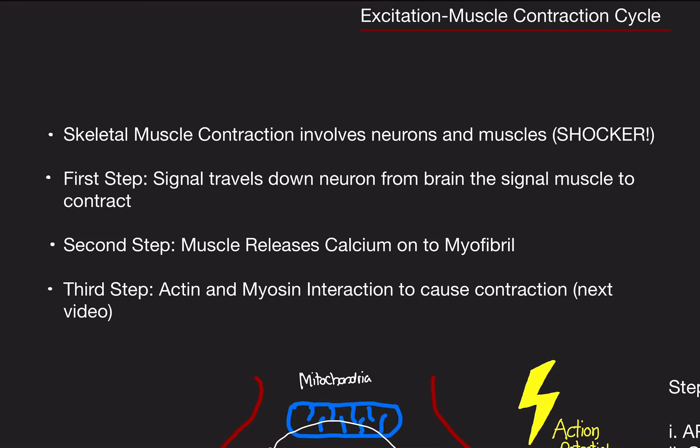Welcome back. Today we're going to be talking about the muscle contraction cycle. Your skeletal muscles have the ability to contract. There are two things really involved in the contraction: neurons and muscles. The first general step is the signal travels down the neuron from the brain to signal the muscle to contract. The second step is the muscle releases calcium onto the myofibril. And the third step is the interaction between actin and myosin is what really causes the contraction — that's basically the next video.